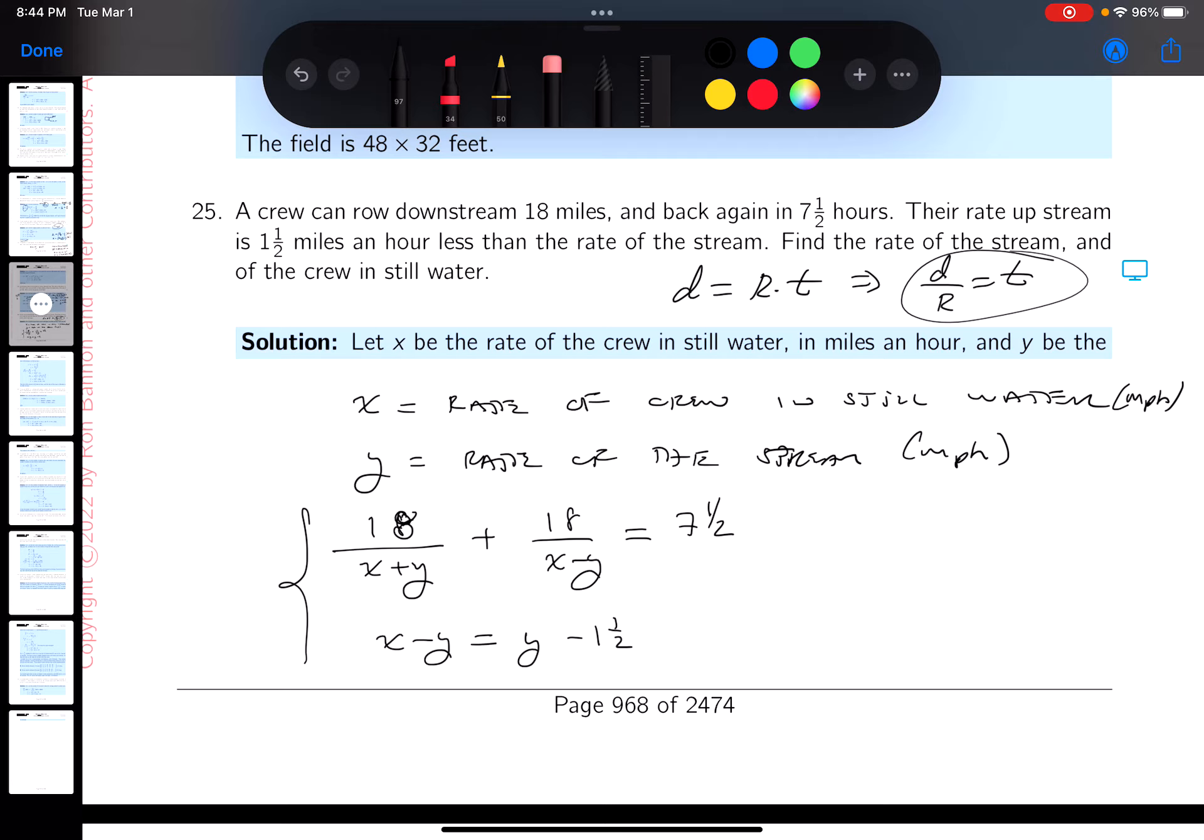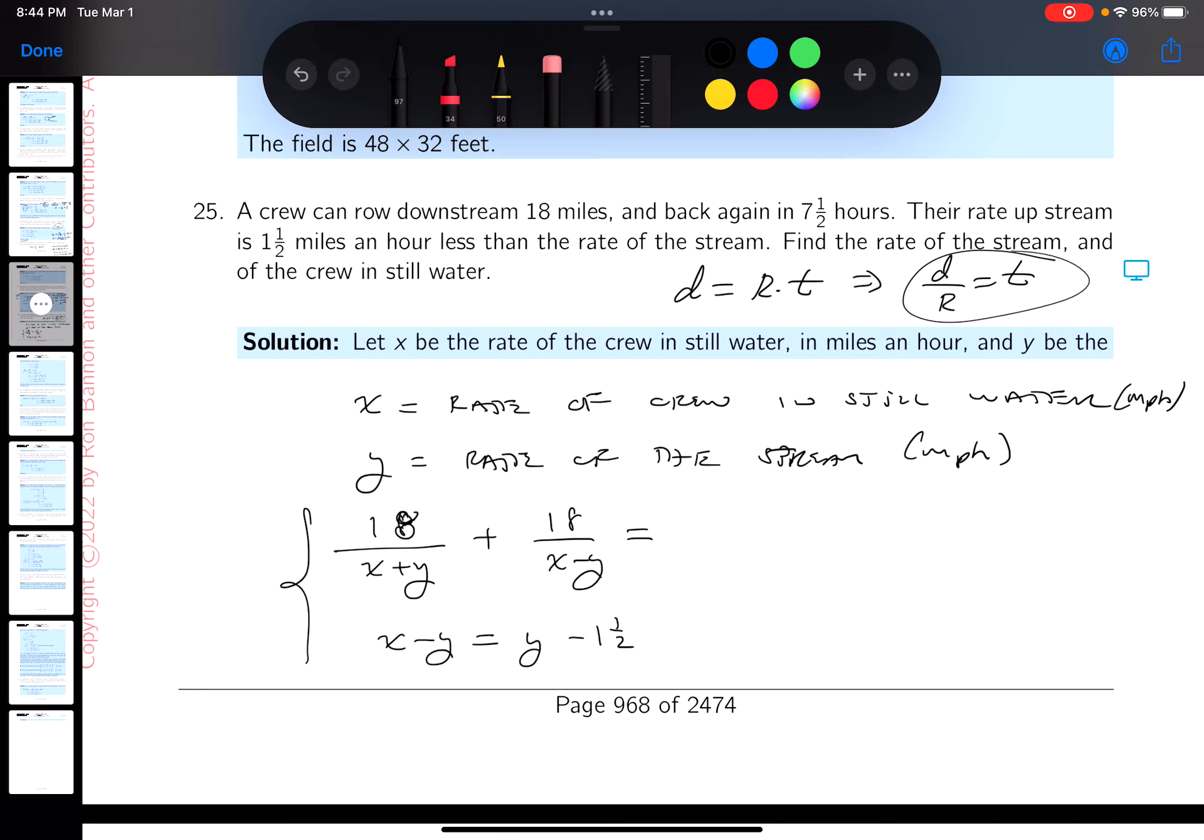They look pretty nasty. Let's take care of the mixed numbers: 7.5 would be 15 halves, and 1.5 is going to be 3 halves.